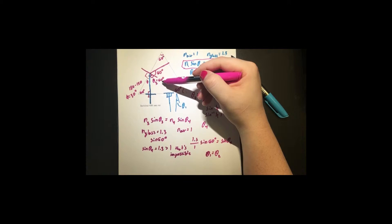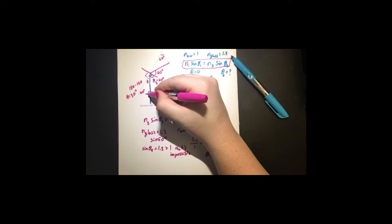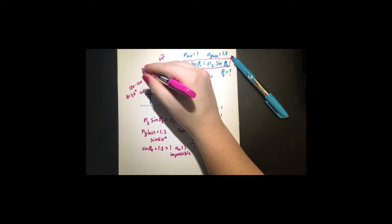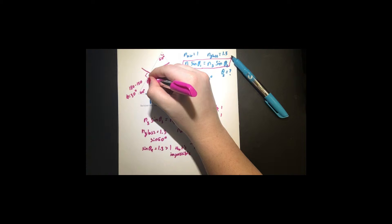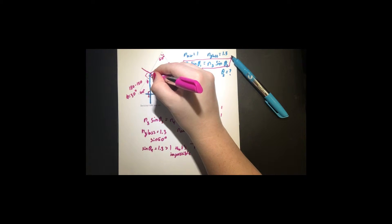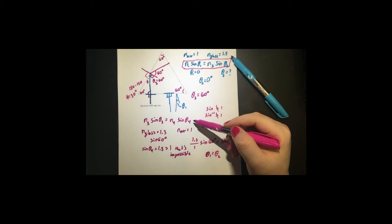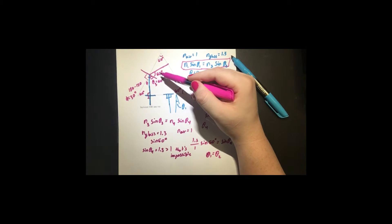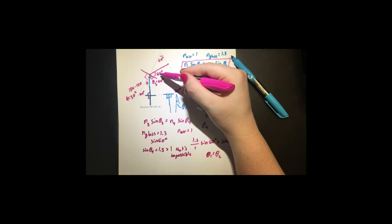To recap: we found theta3 is 60 degrees because the equilateral triangle has an interior angle of 60 degrees, the normal is 90 degrees to the surface, so phi equals 30 degrees, and theta3 must be 60 to make 90. Plugging 60 degrees into Snell's law showed the equation is impossible to solve, confirming total internal reflection. With total internal reflection, the incident angle equals the reflected angle, so our reflected angle is 60 degrees.